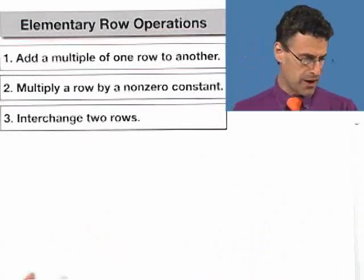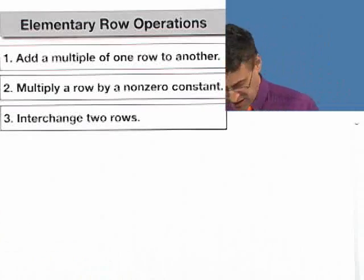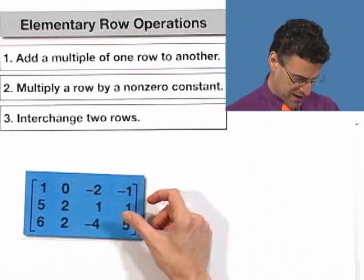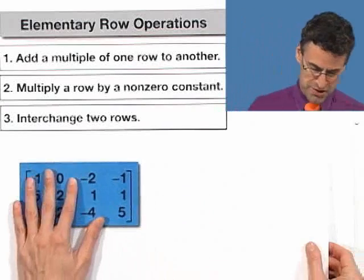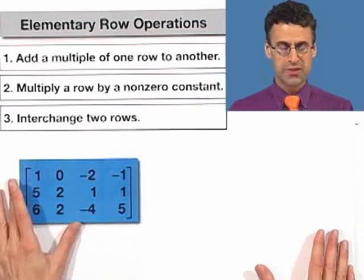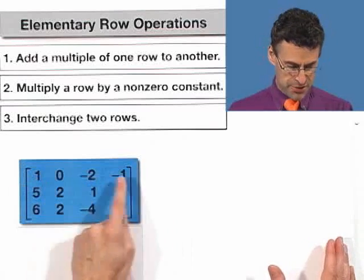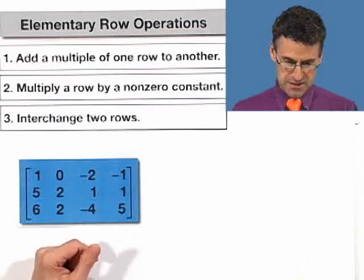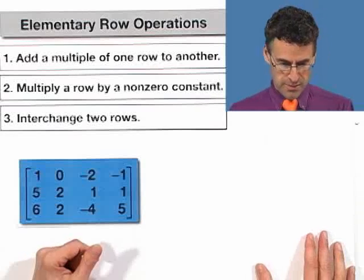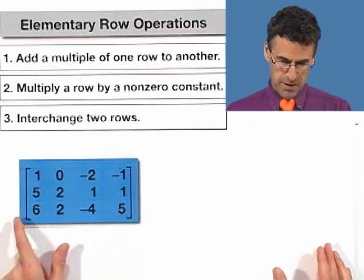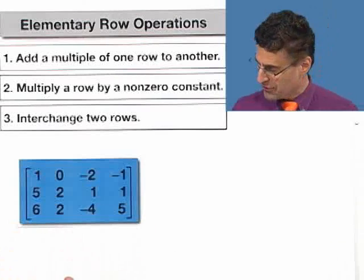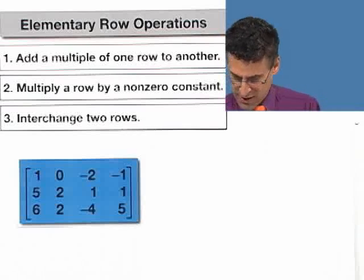Let's try another one. Just for fun, let's take this matrix, again for no particular rhyme or reason, but just to practice these elementary row operations. And let's multiply the first row by 3 and let's multiply the third row by negative 1 half. So if we do that, what do we get?